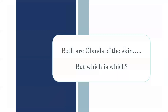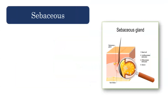So both of these are glands of the skin. What does that mean? Why do we need them, and which is which? They both start with S's, and they tend to make us as confused as possible. We're going to start with sebaceous glands. A sebaceous gland is your oil gland. The function of the sebaceous gland is to produce oil or sebum, which is a fatty lipid-type substance.